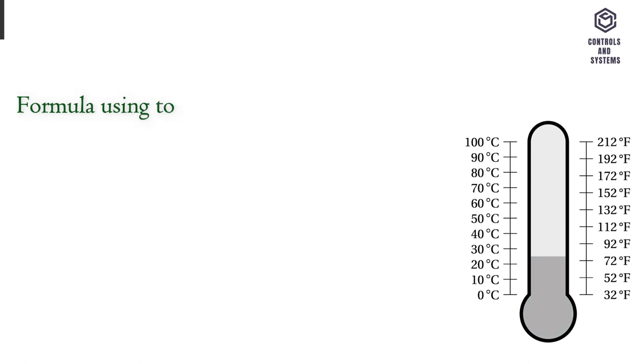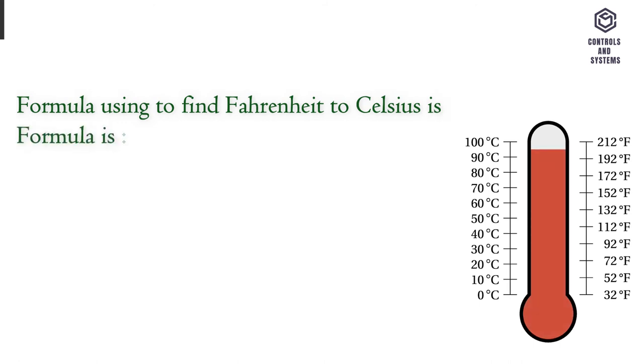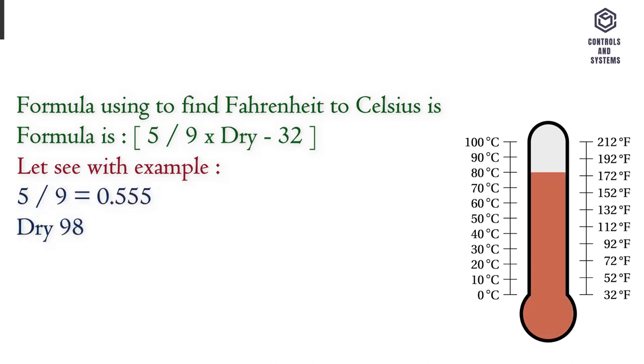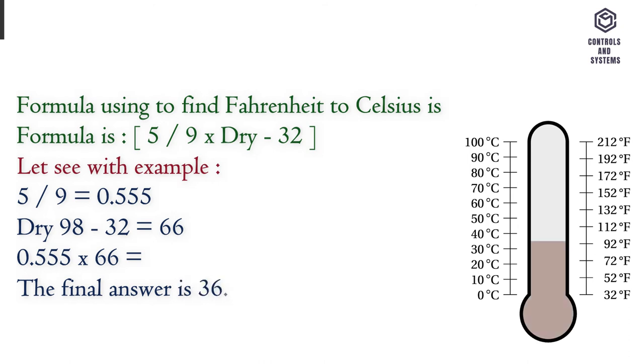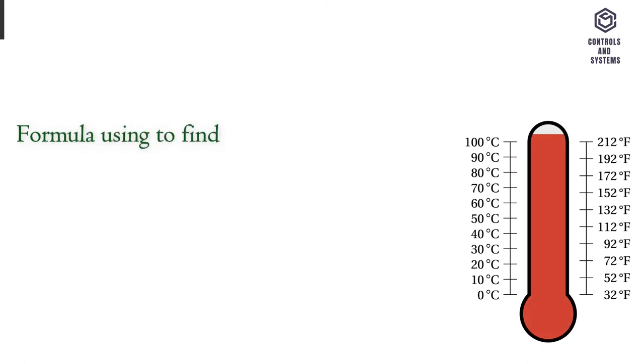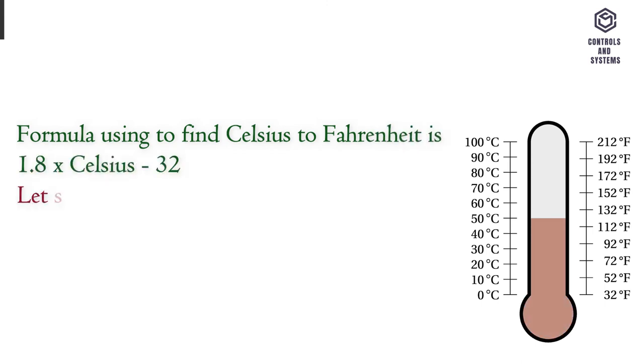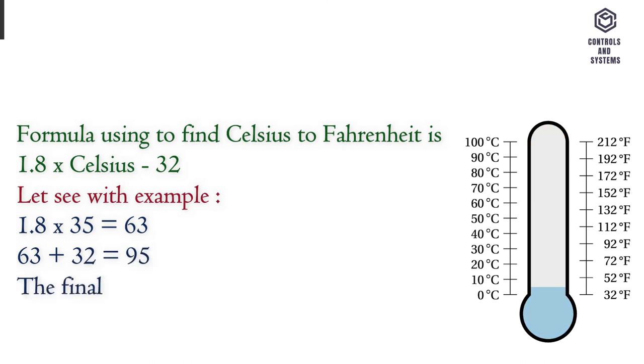Formula using to find Fahrenheit to Celsius is: 5 divided by 9, multiply with dry, subtract 32. Example: 5 divided by 9 equals 0.555. Dry 98 minus 32 equals 66. 0.555 multiply with 66 equals the final answer 36.63 Celsius. Formula using to find Celsius to Fahrenheit is: 1.8 multiply with Celsius plus 32. Example: 1.8 multiply by 35 equals 63. 63 plus 32 equals 95. The final answer is 95 Fahrenheit.